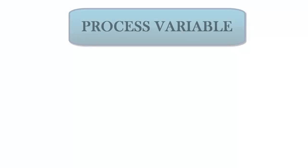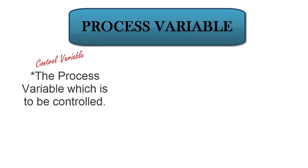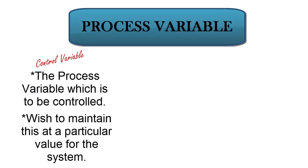Let us revise the different types of process variable that we should encounter in this lab experiment. First, the control variable — this is the process variable which is to be controlled. We wish to maintain this at a particular value for the system.